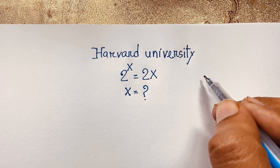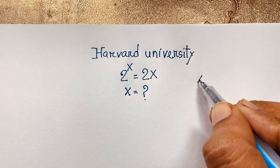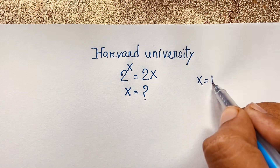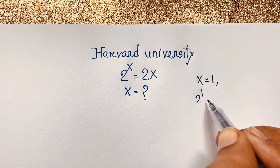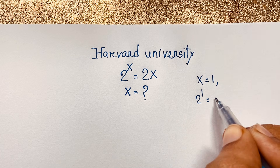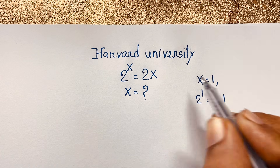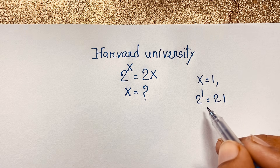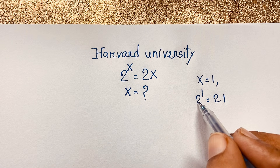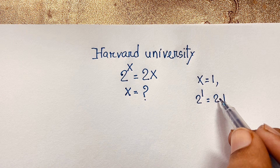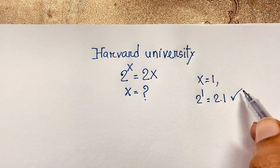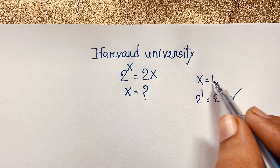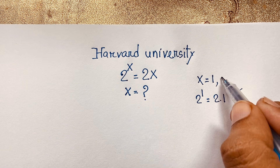I solved this question with an easy method. First of all, if you think x is equal to 1, then 2 to the power 1 is equal to 2 times 1. So 2 equals 2 — left hand side and right hand side are both equal. So x equals 1 is a correct answer.